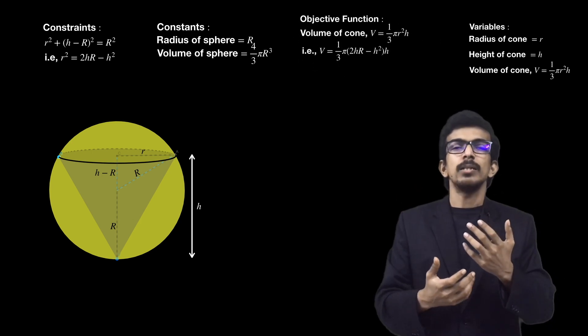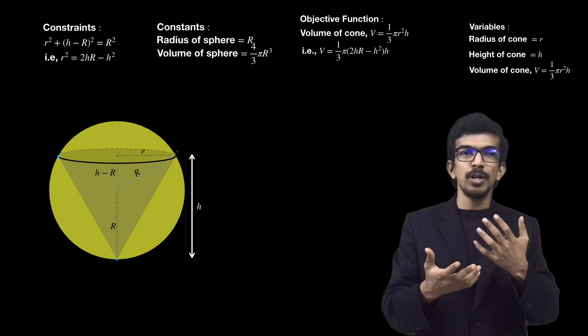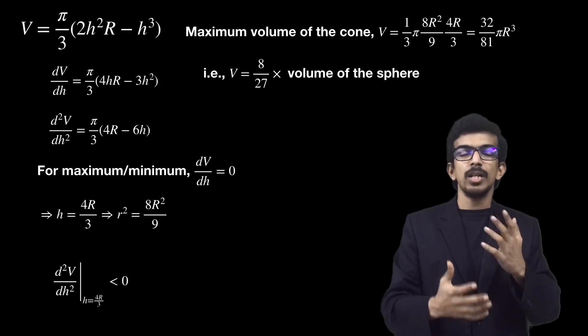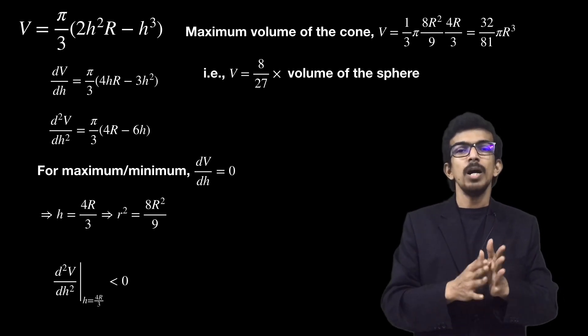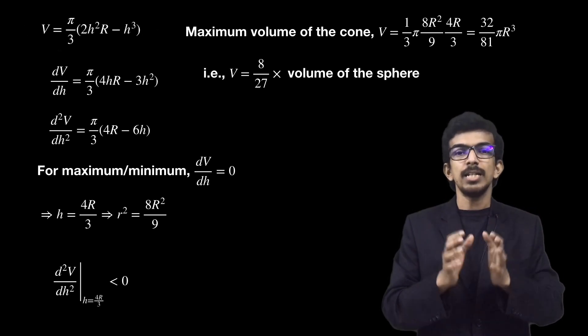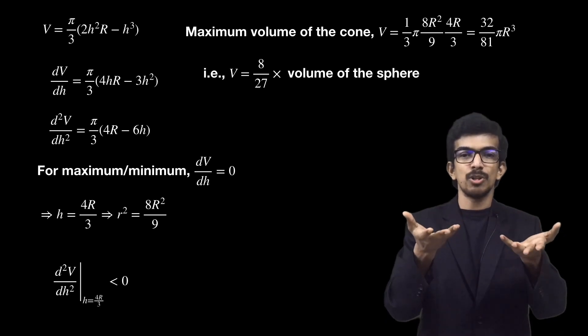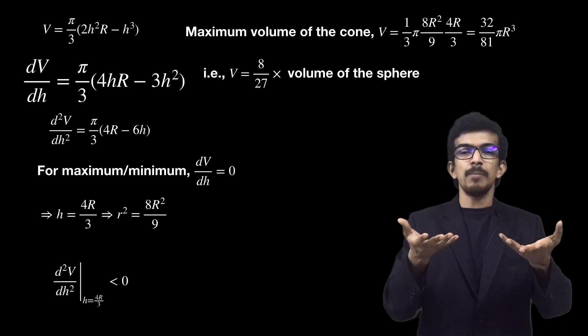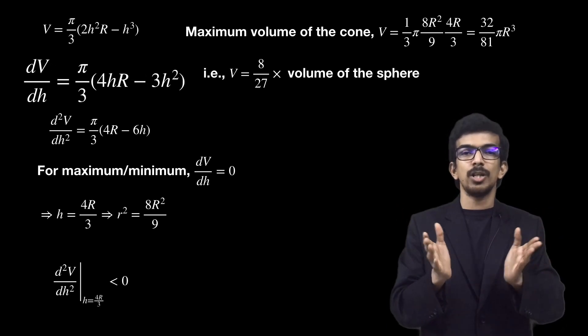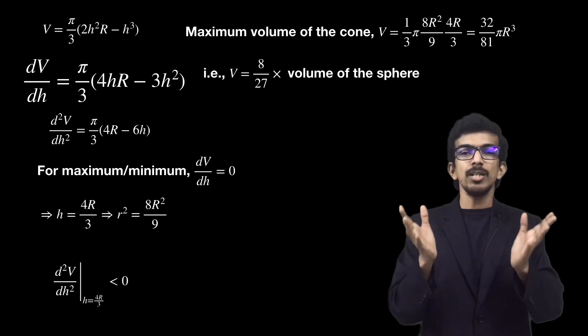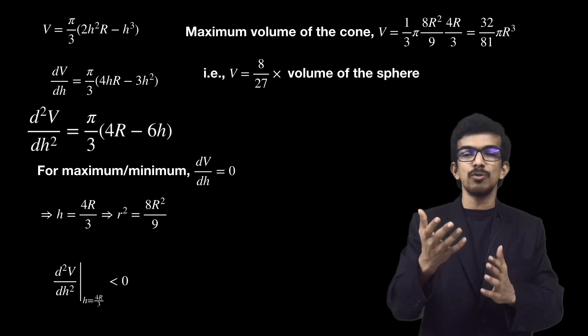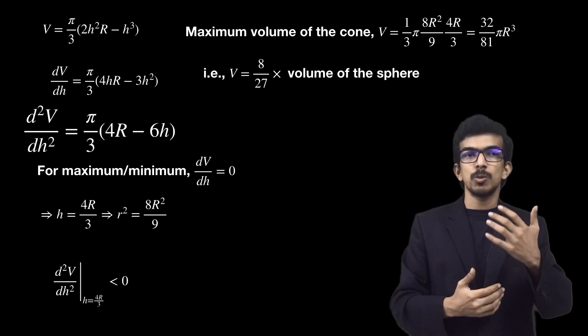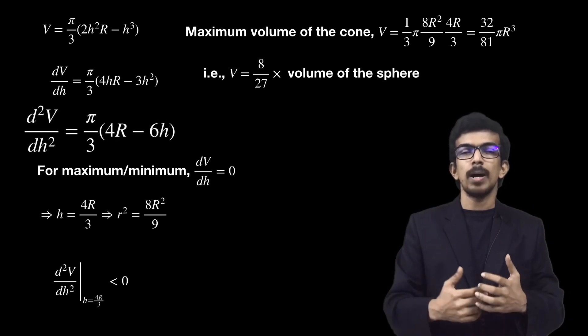Now let's apply the principles from calculus. Our objective function is V = (π/3)(2h²R - h³), which is a function in just one variable h. Let's differentiate this expression: dV/dh = (π/3)(4hR - 3h²). We also need to find the double derivative, which is d²V/dh² = (π/3)(4R - 6h).